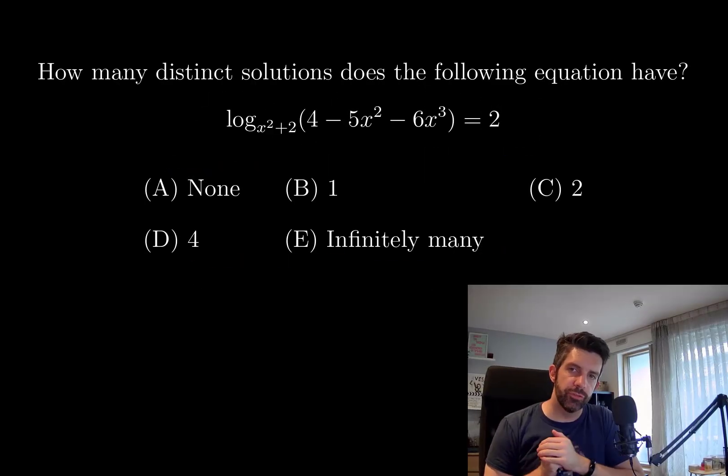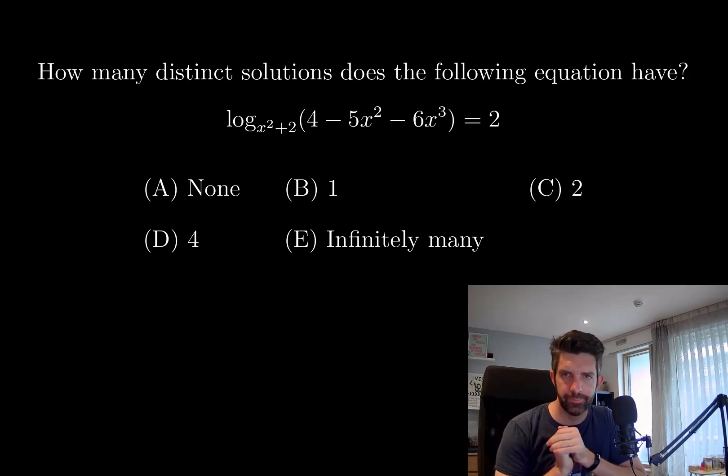How many distinct solutions does the following equation have? Log base x squared plus 2 of 4 minus 5x squared minus 6x cubed equals 2. The answer choices are: 0, 1, 2, 4, or infinitely many.